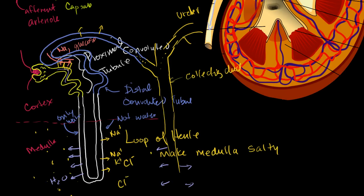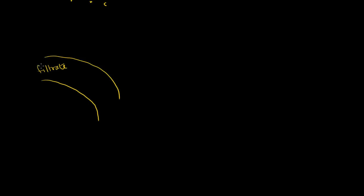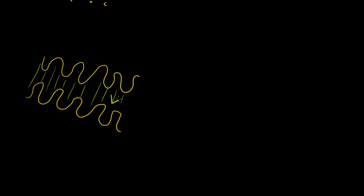Let's start with the proximal tubule. If we zoom in on that part and draw the inside of the nephron — the proximal tubule has these little things that stick out, sometimes referred to as a brush border. This inside right here is our lumen, and that is where the filtrate is.